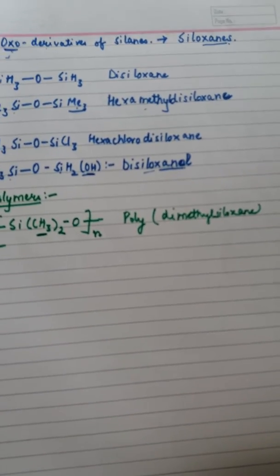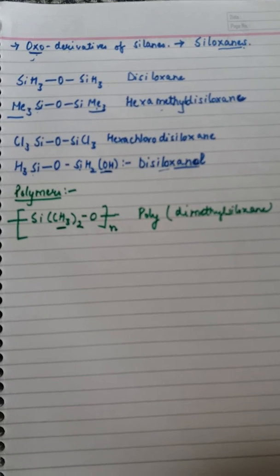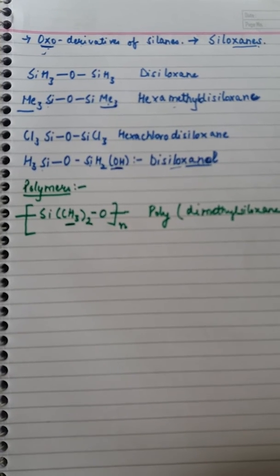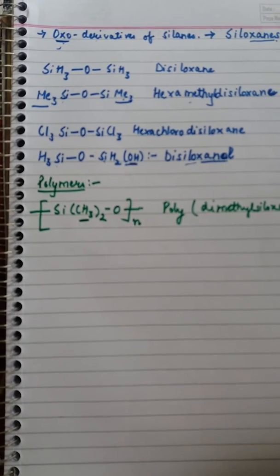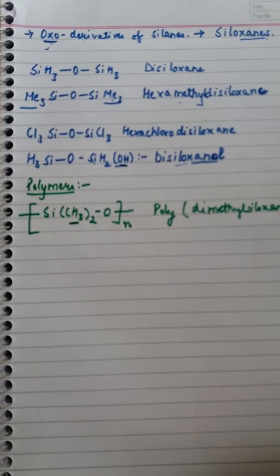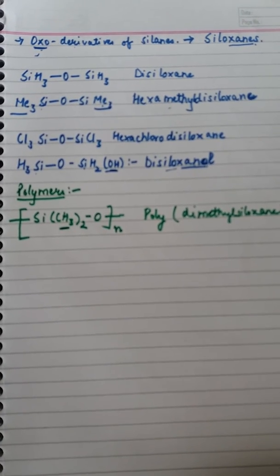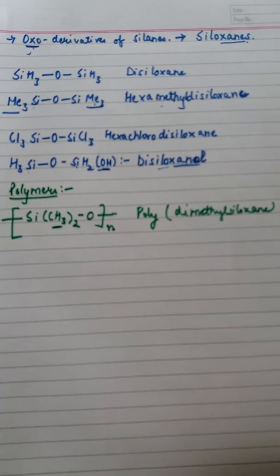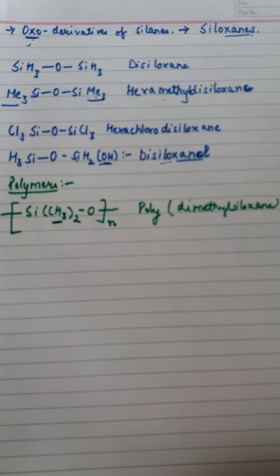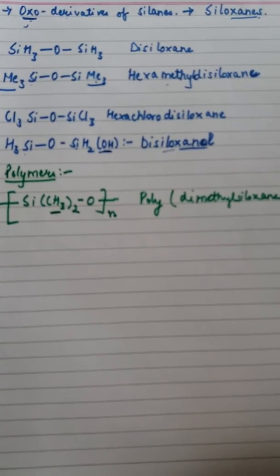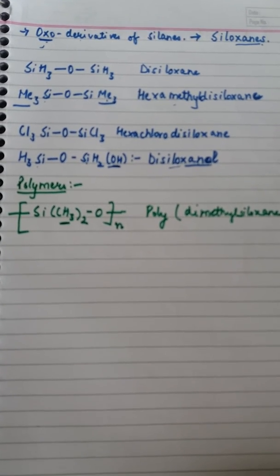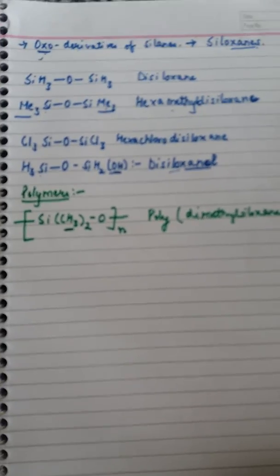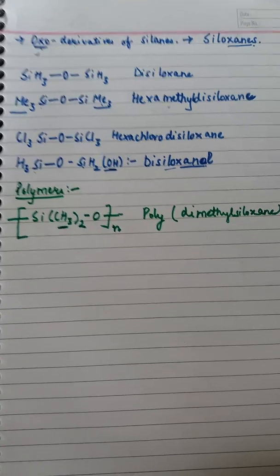That covers the nomenclature of silicones. In the next lecture we will study the preparation of silicones — how they can be prepared, their reactions with various chemical compounds, and how the three different structures (cyclic, linear, or cross-linked polymers) are formed.